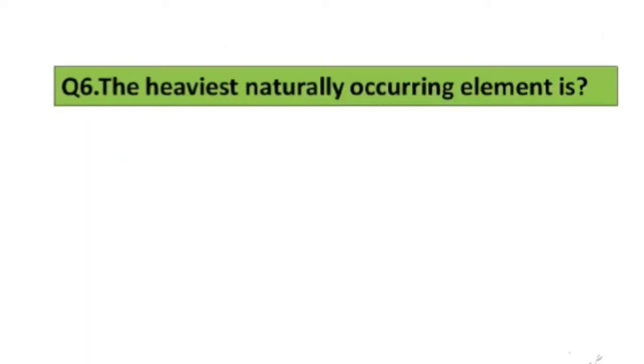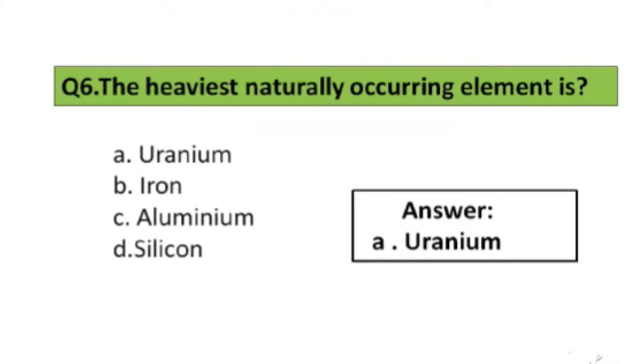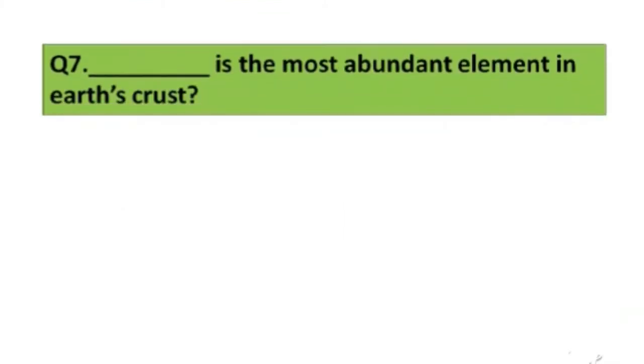Question number 6. The heaviest naturally occurring element is: A. Uranium, B. Iron, C. Aluminium, D. Silicone. The right answer is option A, Uranium.